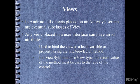View itself is a subclass of object. Any view placed on a user interface can have an ID attribute. This is used to bind a view to a variable or a property, and we do that by using the findViewById method, as we've seen before. FindViewById returns a view, and it will have to be cast to the type of the control that we want to interact with.